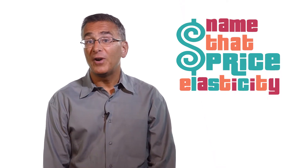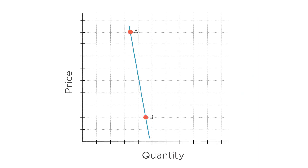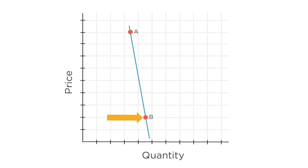You can imagine two types of goods with very different demand curves. Here is a demand curve for a good with really low price elasticity of demand. This means demand isn't very responsive to price. Look at what happens as we move from a high price at point A to a low price at point B — the quantity demanded barely changes at all, even though the price changed a lot. We call this inelastic demand.